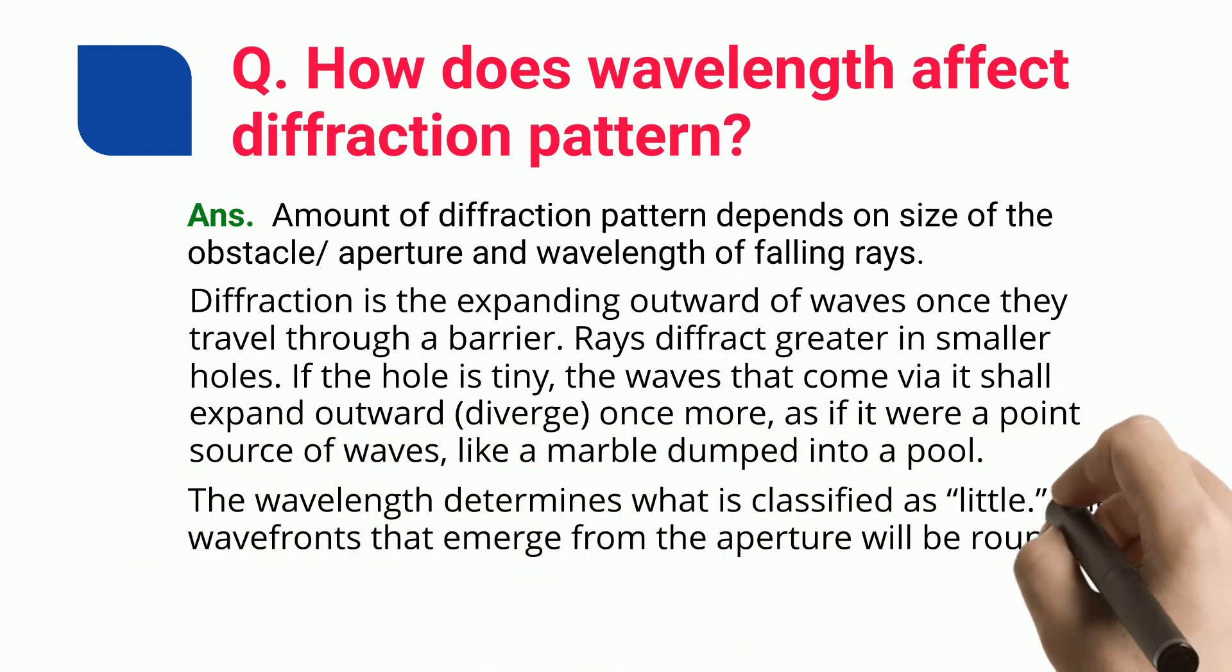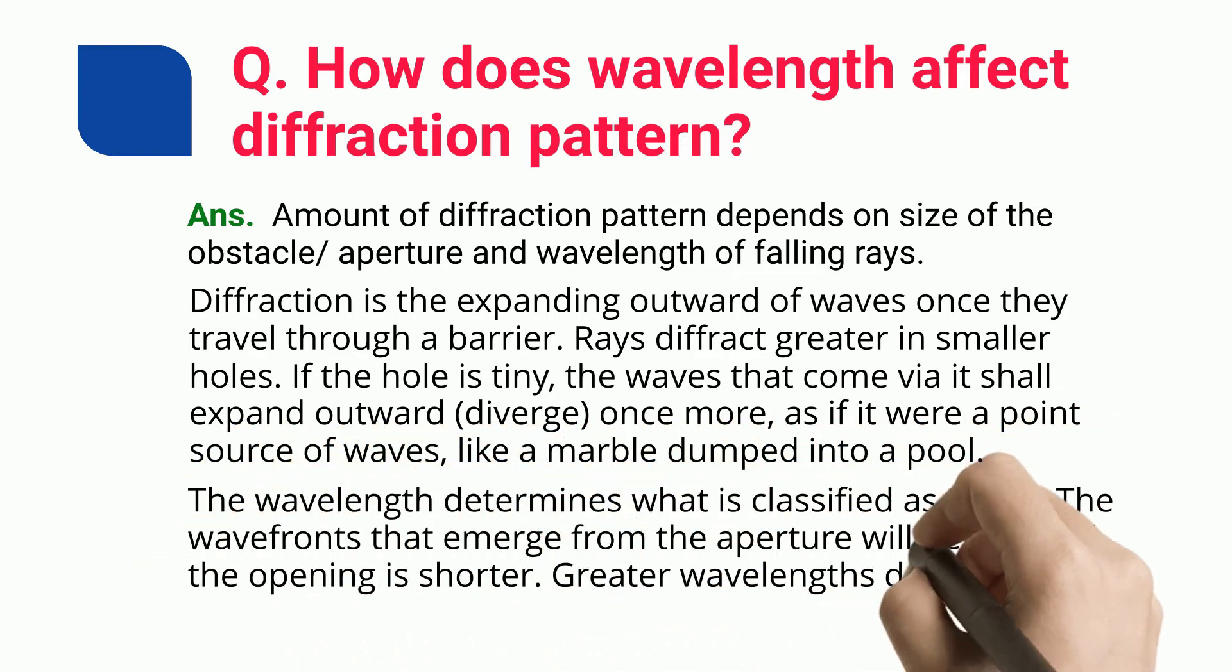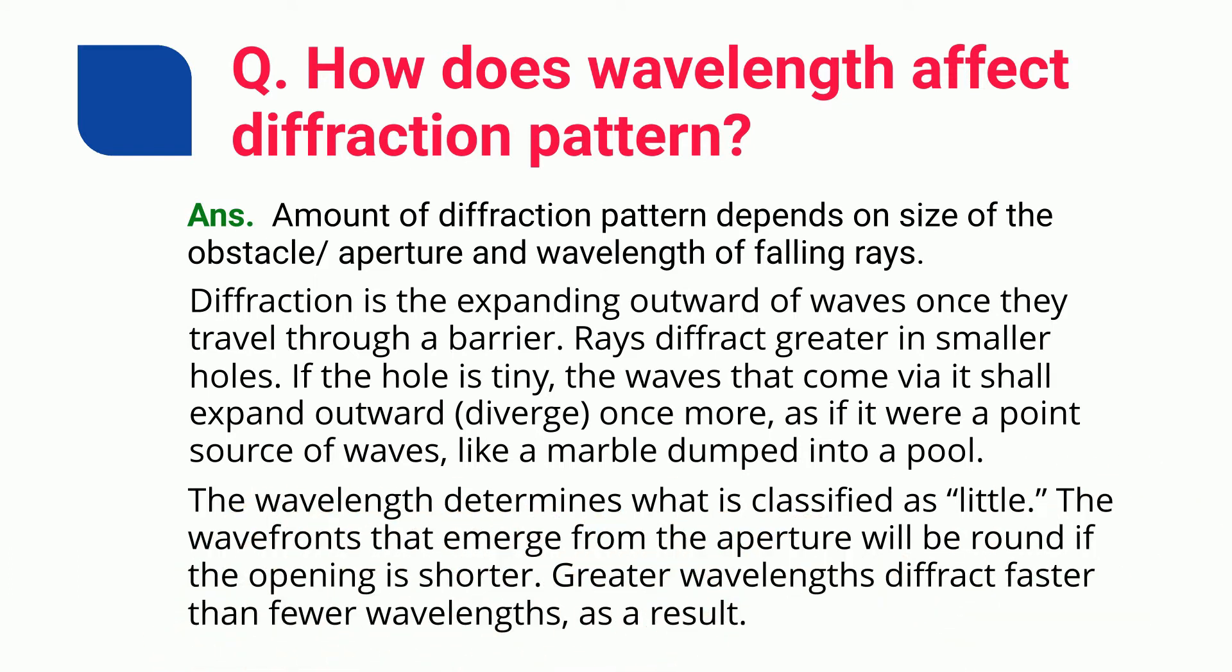The wavefronts that emerge from the aperture will be round if the opening is shorter. Greater wavelengths diffract faster than fewer wavelengths, as a result.